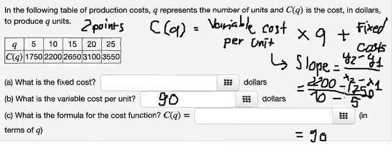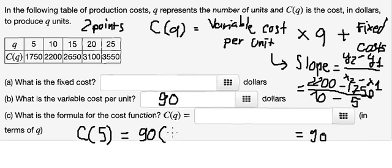After we find the slope, we can use one point to find the fixed cost. I will choose q equal to 5. We put 90 in here, q we change by 5.